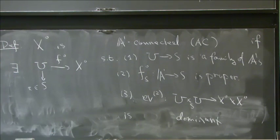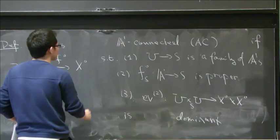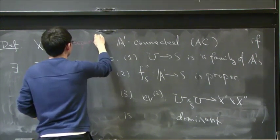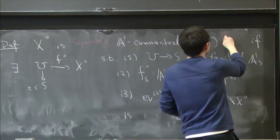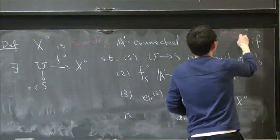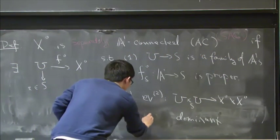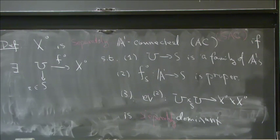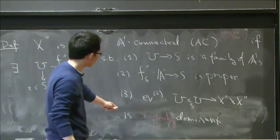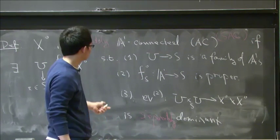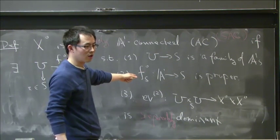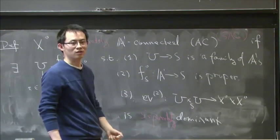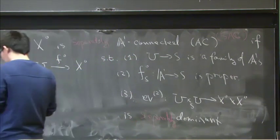And similarly, if you want to work better in the positive characteristic case, you want to add the separateness. So instead of AC, you have SAC, just like the case of rational connectedness. And separate values. If you have generic fiber, then you just delete the fiber that does not satisfy this. So I guess this doesn't matter.